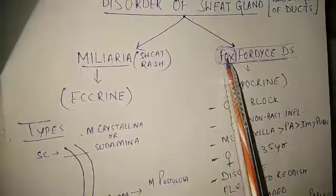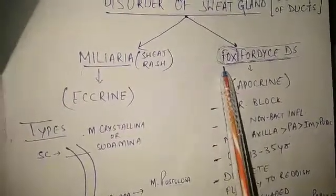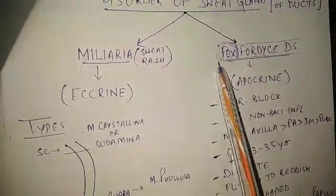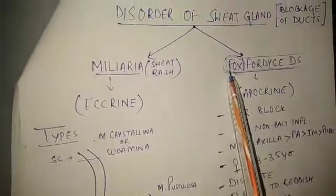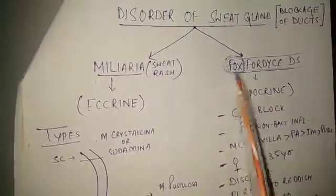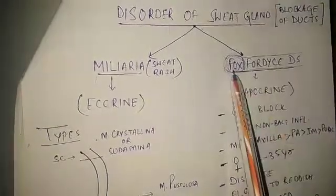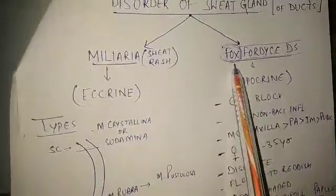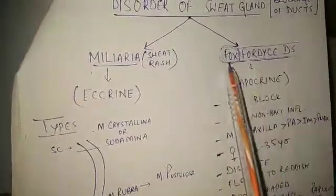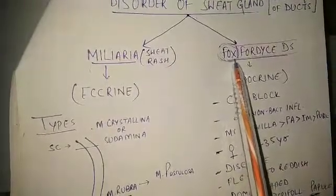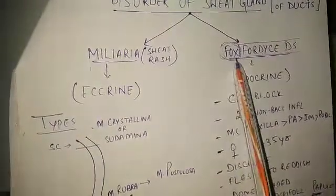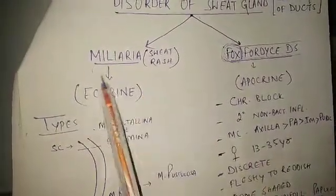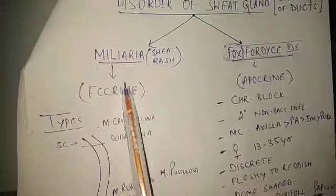Fox is an animal, and she runs very fast. Because of excessive running, she sweats a lot. In this way you can remember that Fox-Fordyce disease has 'fox' in it, so it should be the disorder of the sweat gland. Also, you can identify the location of Fox-Fordyce disease by focusing on the word 'fox' — it has an 'x' in it, so it affects the axilla, which also has 'x' in it.